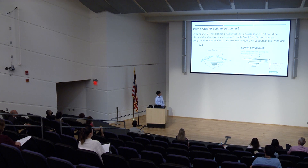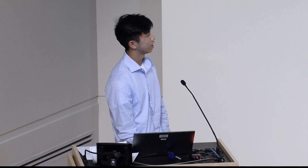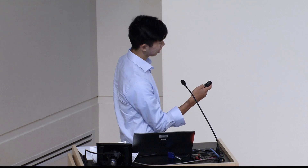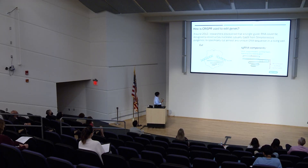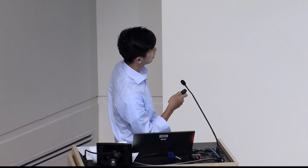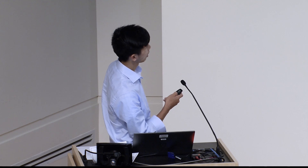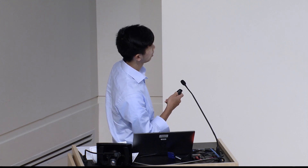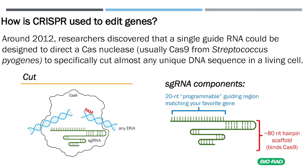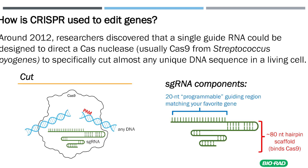How is CRISPR used to edit genes? Around 2012, researchers discovered that a single guide RNA could be designed to direct a Cas nuclease to specifically cut almost any unique DNA sequence in a living cell. As accurately represented in this diagram, the Cas9 is guided by the single guide RNA to a PAM sequence, which tells the single guide RNA where to cut on the unique strand of DNA. We also have some single guide RNA components shown here.